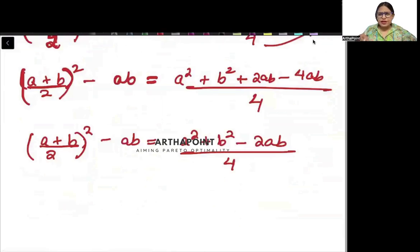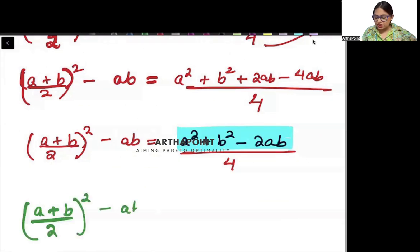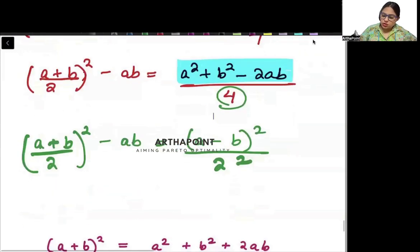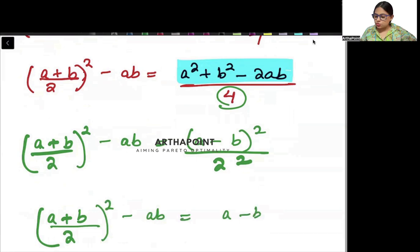If I look at the right-hand side, isn't this the formula of (a minus b) whole square? So I will get (a plus b by 2) whole square minus ab is equal to (a minus b) whole square by 2 square. I have written 4 as 2 square. Solving this, (a plus b by 2) whole square minus ab is equal to (a minus b by 2) whole square.